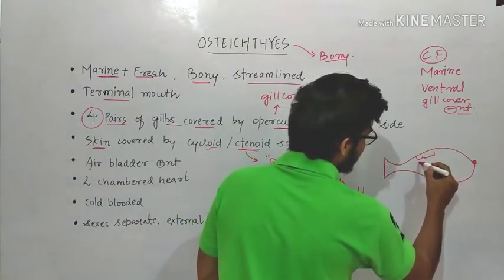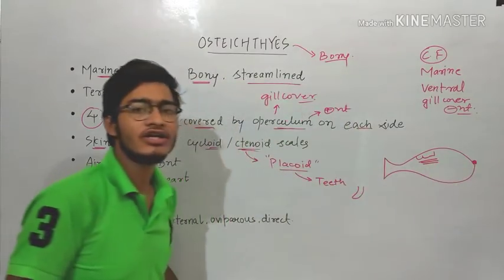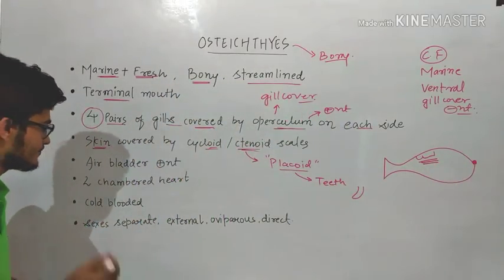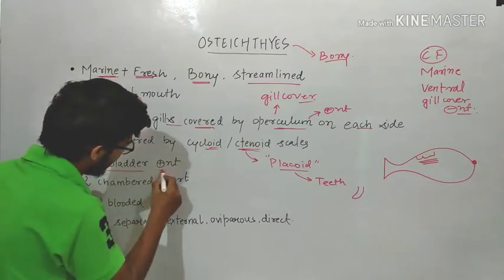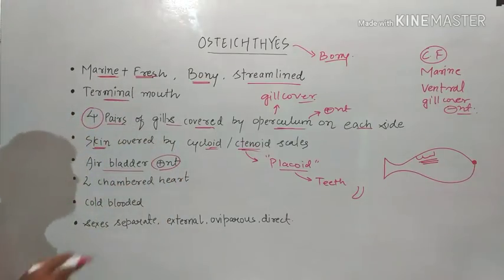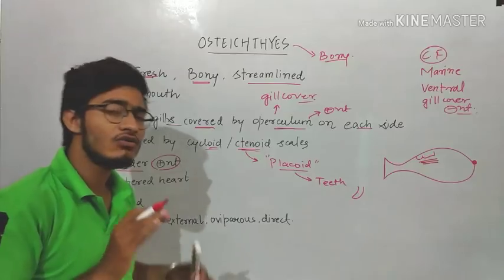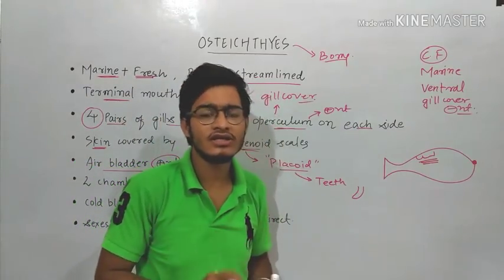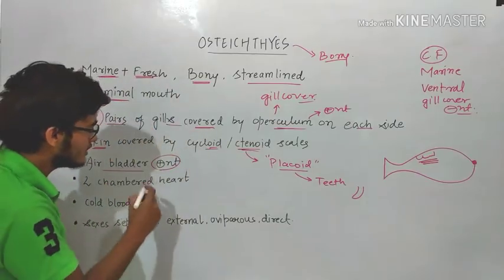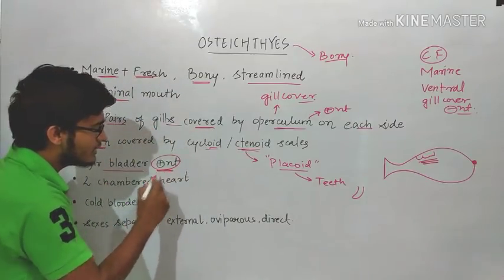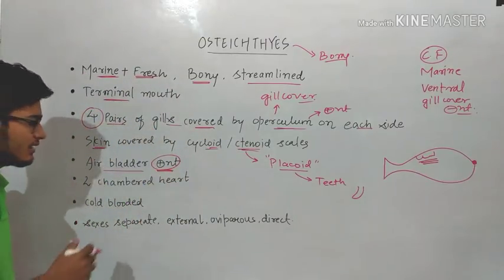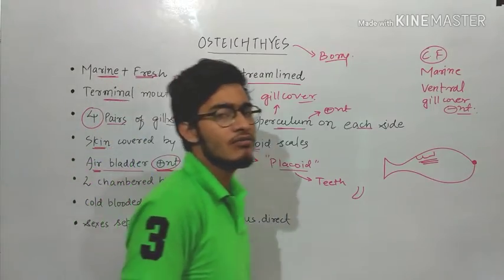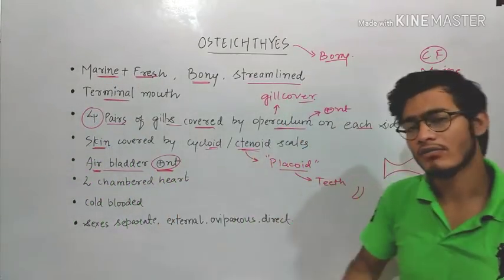Those scales are cycloid or ctenoid scales in case of bony fishes. The air bladder is present in bony fishes. Cartilaginous fishes have to swim constantly — whenever they stop swimming they will sink in the water, because in their case the air bladder is absent. But bony fishes don't have to swim constantly because they have an air bladder.